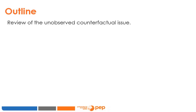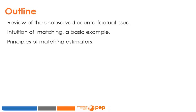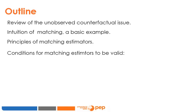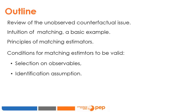This module begins with a review of unobserved counterfactuals, as a reminder of how important they are. Then I will talk about the intuition behind the matching approach, starting with the simplest possible example, then discussing the basic principles of matching estimators. At the end of this module, you should understand which conditions are required for matching estimators to be valid: the condition of selection on observables, as well as the identification assumption, which is a more technical condition and easier to verify. What is important is to understand their empirical consequences — what do these assumptions mean and how can we interpret them?